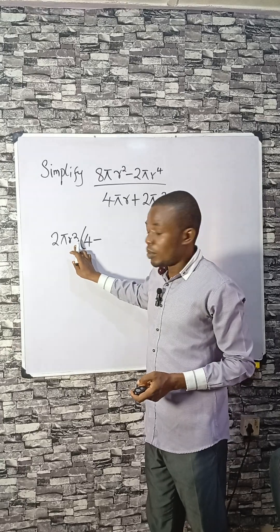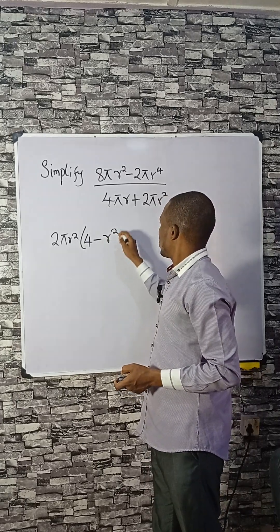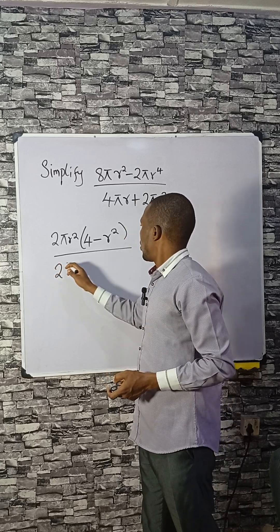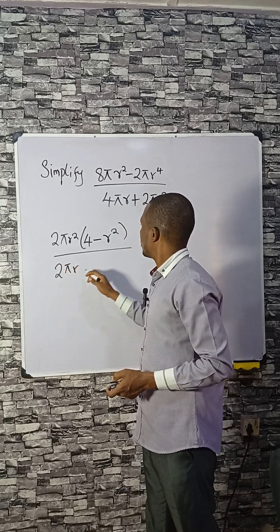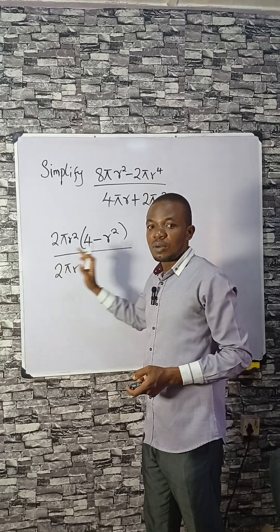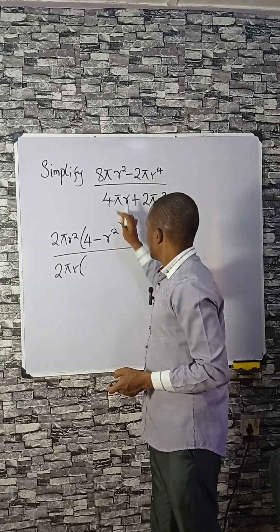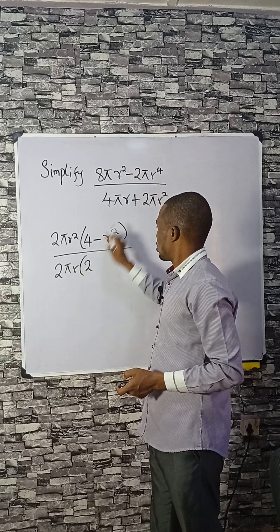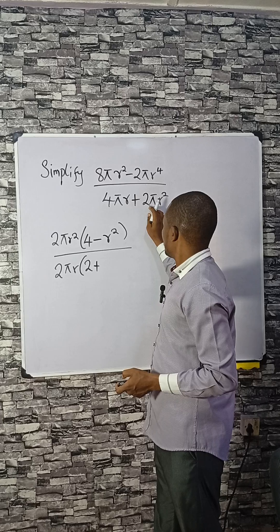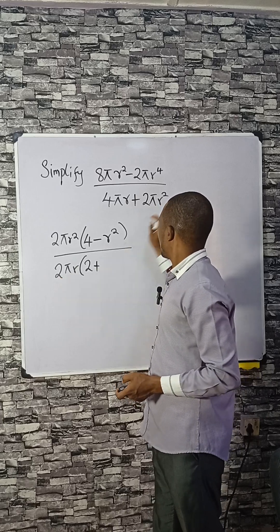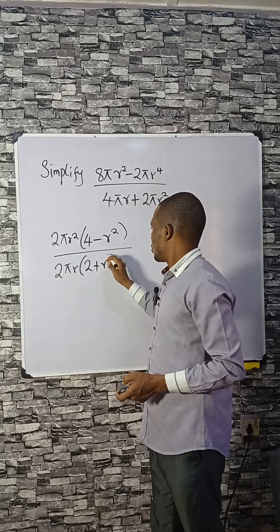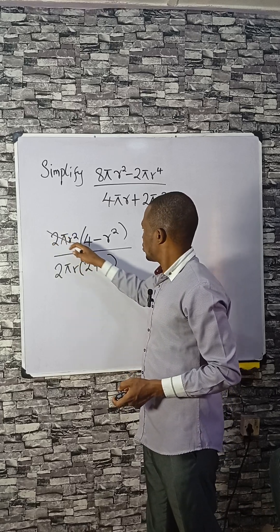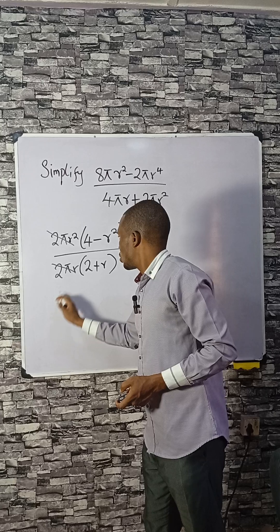...r raised to the power 2, so what is left is just r raised to the power 2. The same thing here: 2πr. The lowest term outside is 2, since 4 divided by 2 is 2. π cancels π, r cancels r. Then 2πr squared divided by r gives r, so we keep it here.